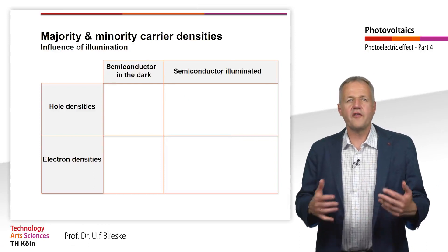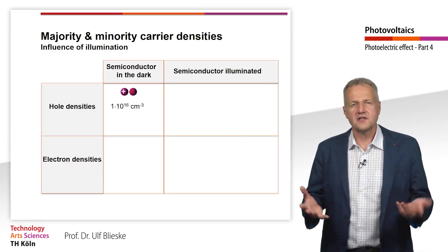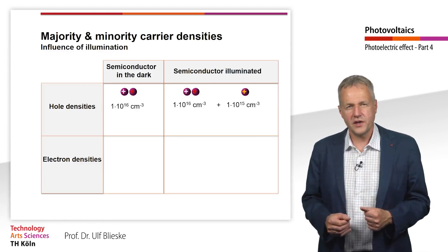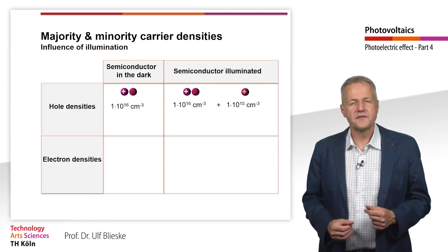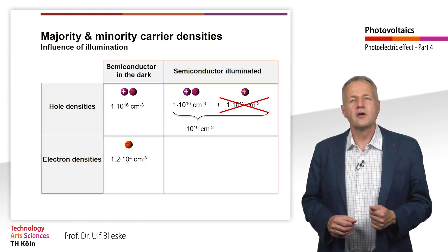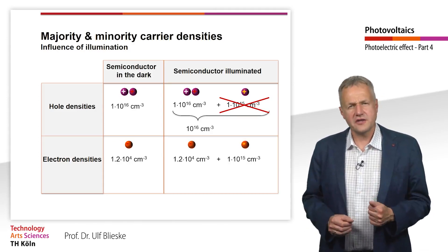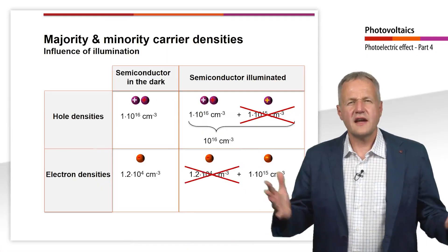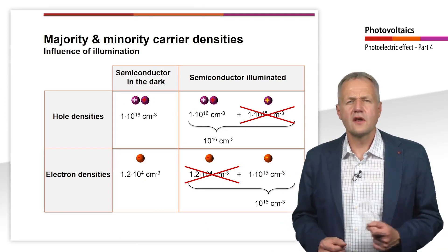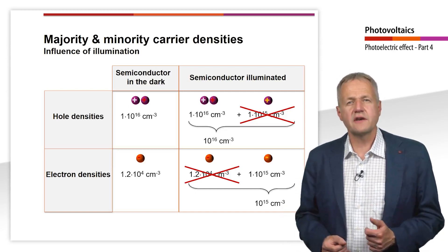We now compare the charge carrier densities of an illuminated semiconductor with an unilluminated one. In the dark, the hole density in the p-region is 10¹⁶ per cubic centimeter; irradiation with sunlight adds 10¹⁵ per cubic centimeter, but this can be neglected. The electron density in the p-doped semiconductor in the dark is 10⁴ per cubic centimeter, but irradiation adds 10¹⁵ electrons — 100 billion times more. The charge carriers produced by the photoelectric effect have a significant influence on the minority carriers, while the influence on the majority carriers can be neglected.